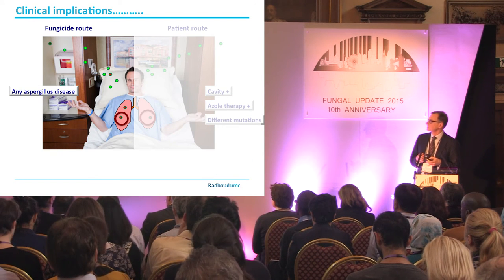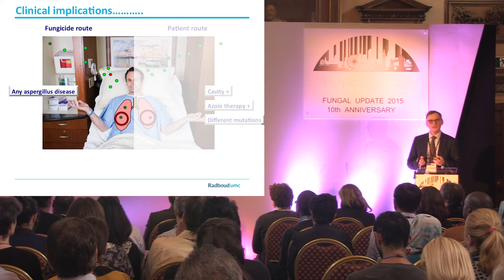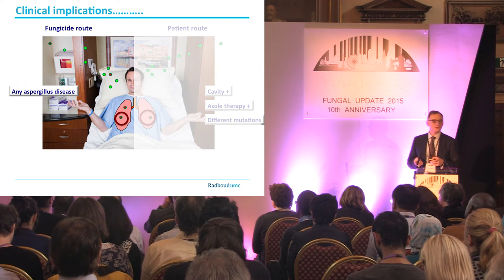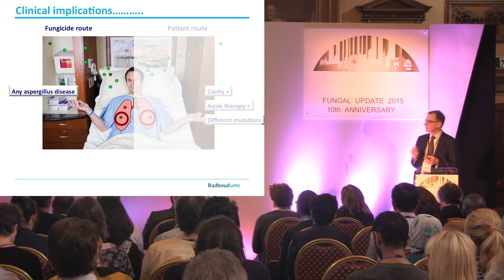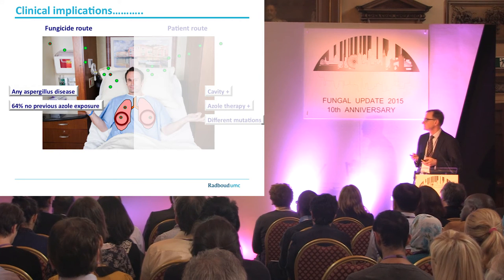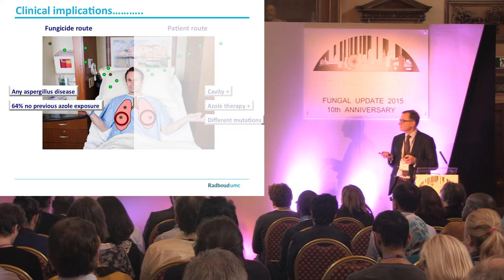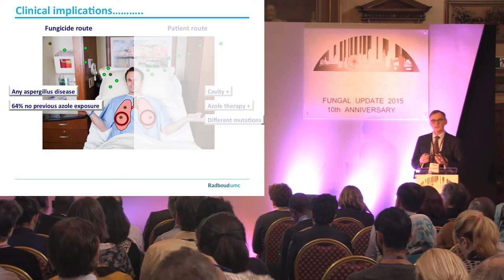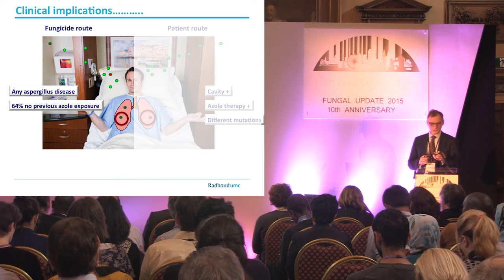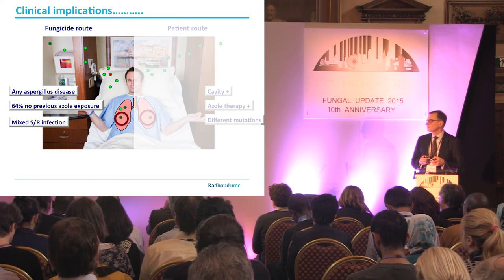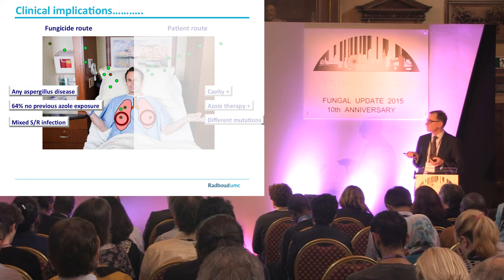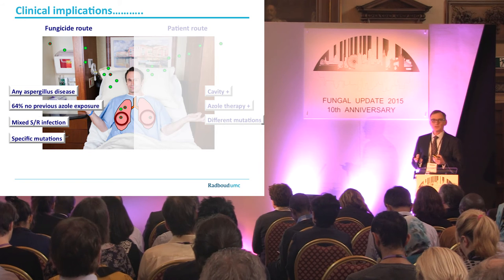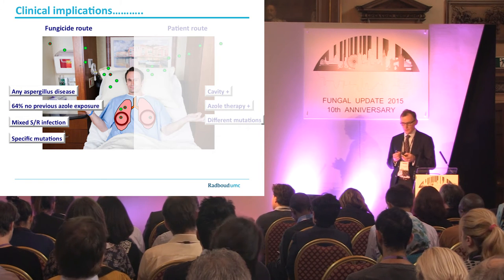The characteristics of the fungicide route are: azole resistance can be found in any Aspergillus disease — patients with cavities but also patients with invasive aspergillosis. Surveillance studies found that two-thirds of patients with invasive aspergillosis due to an azole-resistant isolate had never been treated with azoles before. There are also mixed infections with both susceptible and resistant Aspergillus fumigatus, and a limited number of specific mutations in the isolates.